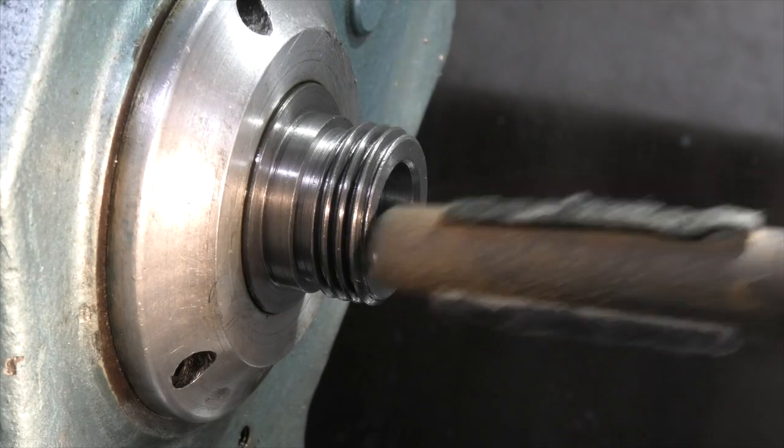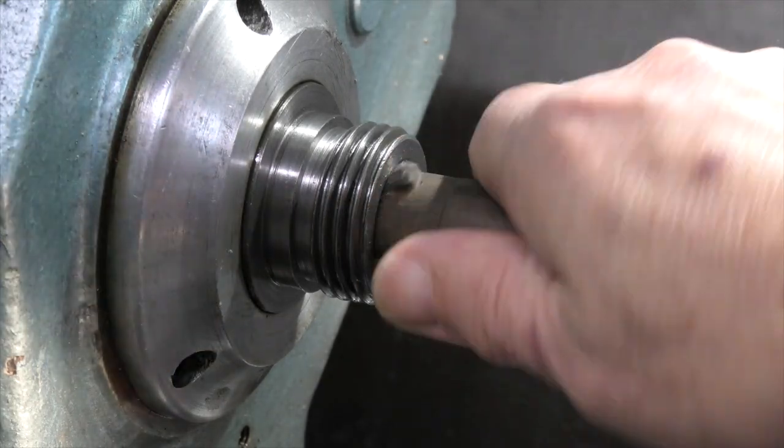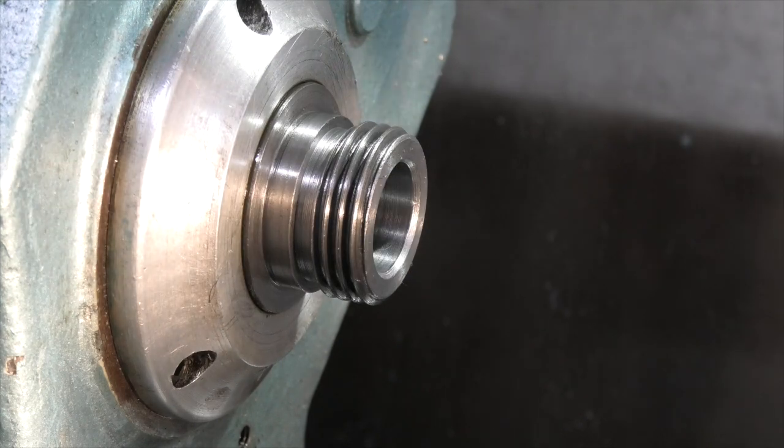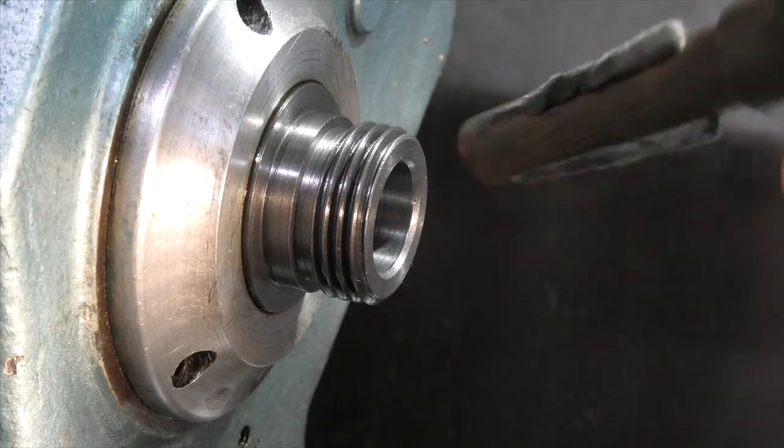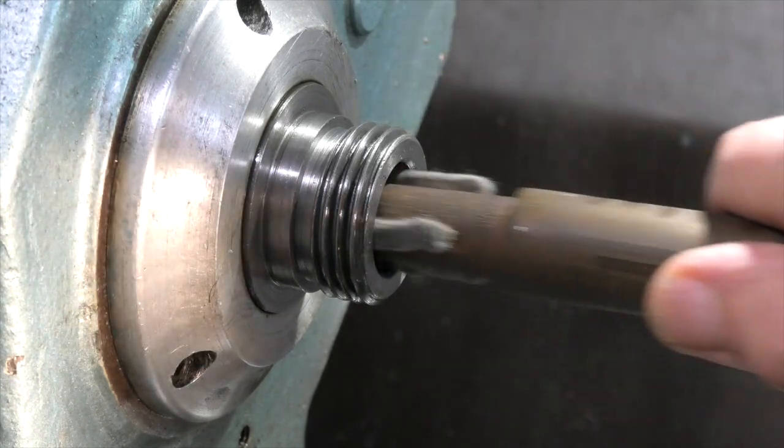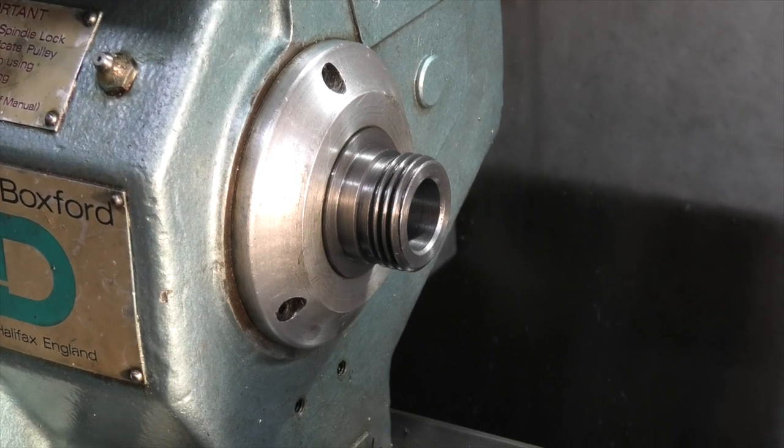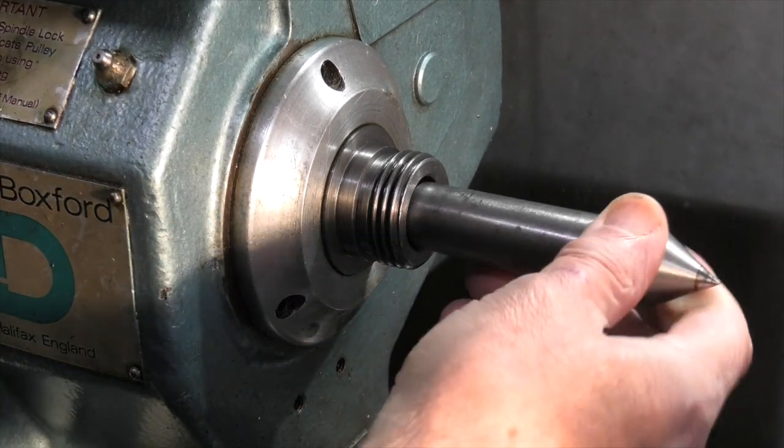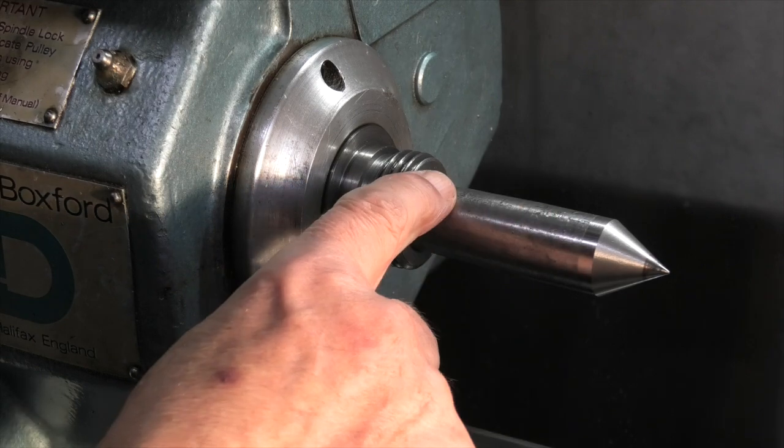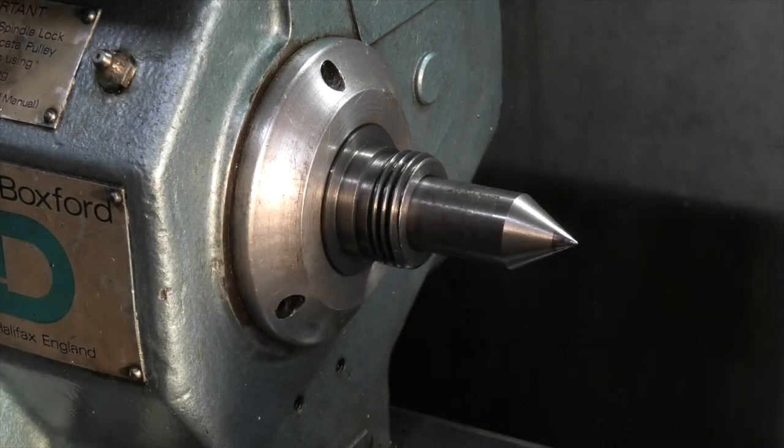First of all I'll use this to clean the bore. The morse taper on this end and the number one on the other. Cleaning this bore out. Now in this headstock I'll just put this centre, the morse taper with the centre on the end. That just holds in there.